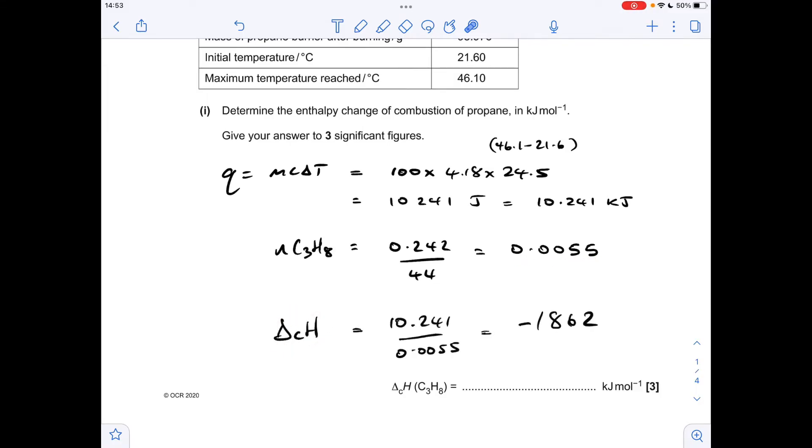So the enthalpy change of combustion, the kilojoules divided by the moles minus exothermic reaction, temperature of the water went up. 18.62 is the calculator value, but we've just got to be careful here, it wants the answer to three significant figures. So obviously that goes to minus 1860 kilojoules per mole.